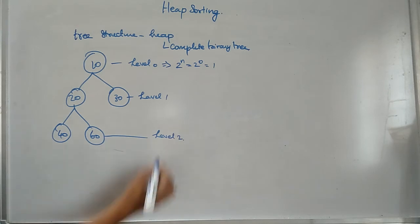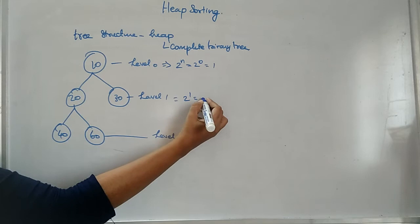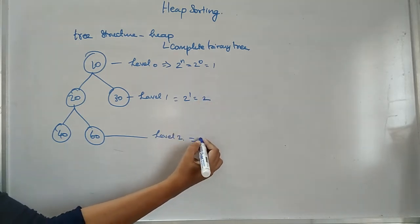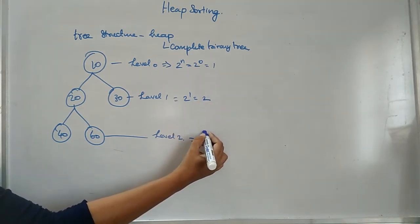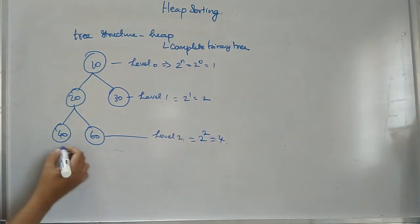And then here you will have 2 to the power of 1, which gives 2 nodes here. At level 2, you must have 2 to the power of 2, so you must have 4 nodes, but here only 2 nodes are available.